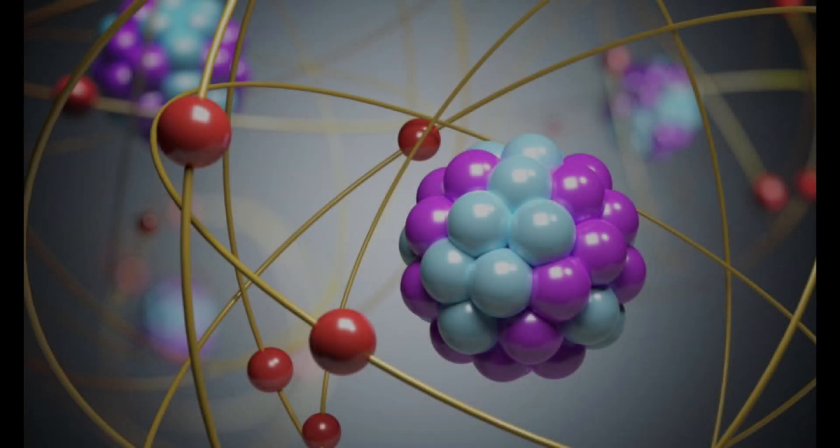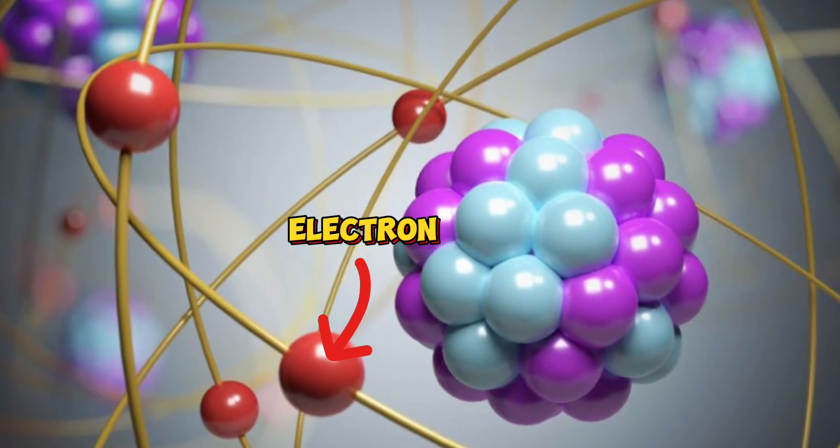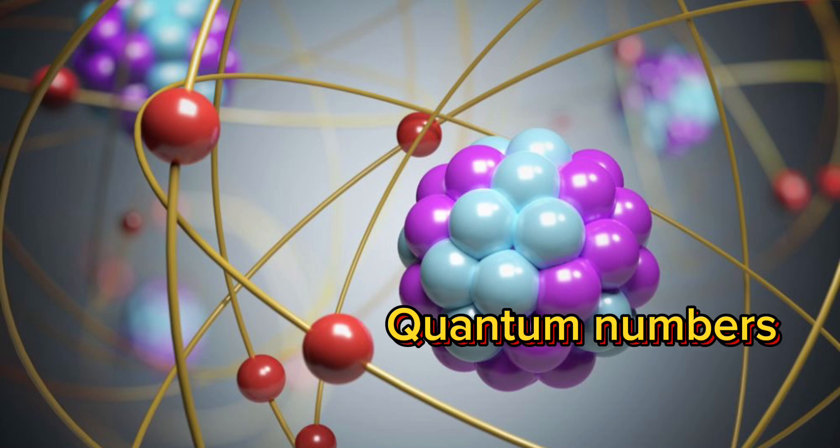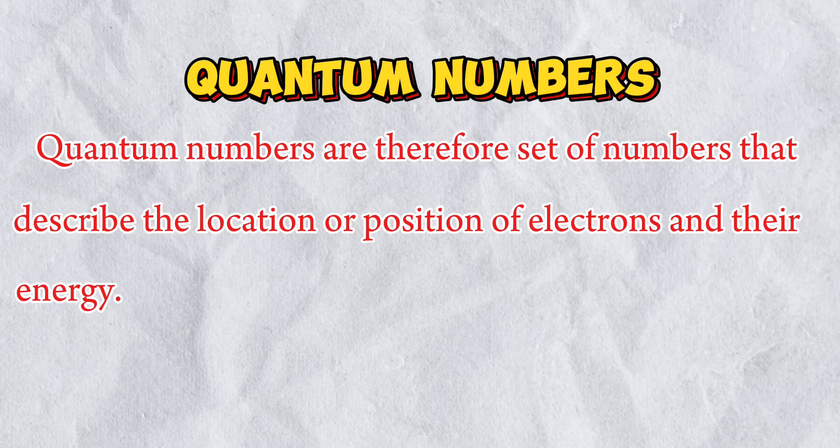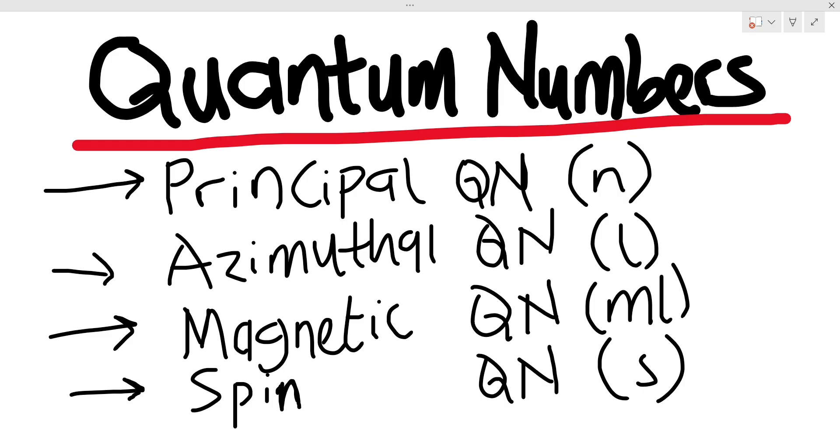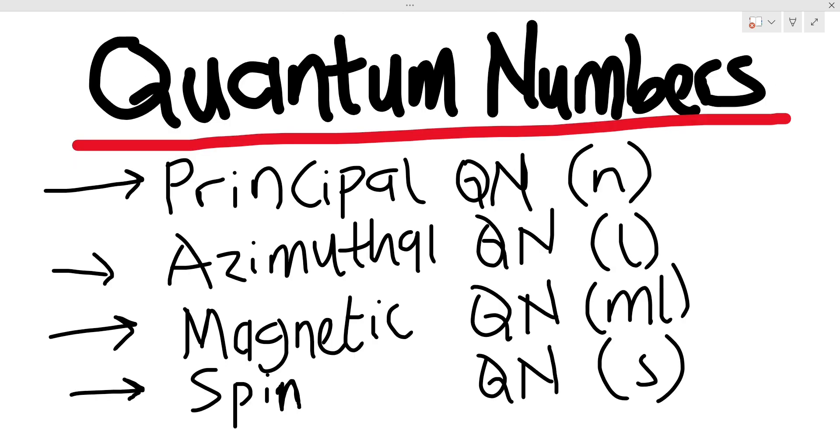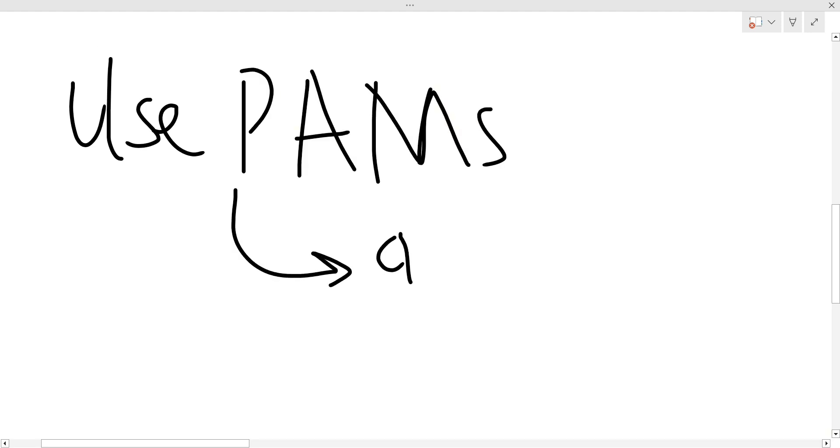Now, just like we do have addresses, electrons also have addresses and these addresses are called the quantum numbers. The four examples of quantum numbers, where QN denotes quantum numbers, include principal, azimuthal, magnetic, and spin quantum numbers. And we'll be looking at each of them as we proceed. You can use the acronym PALMS to remember.